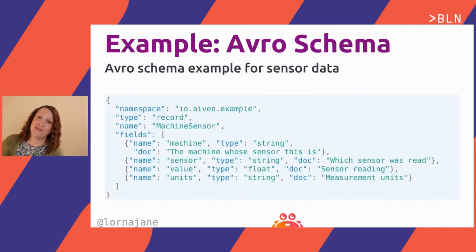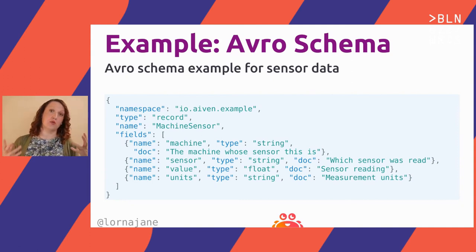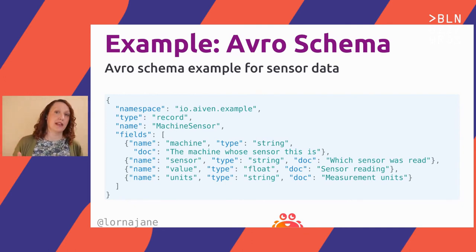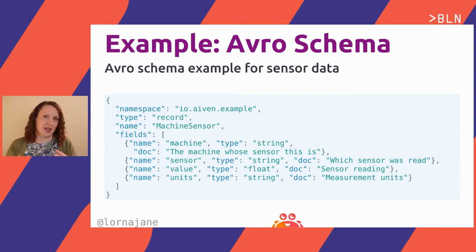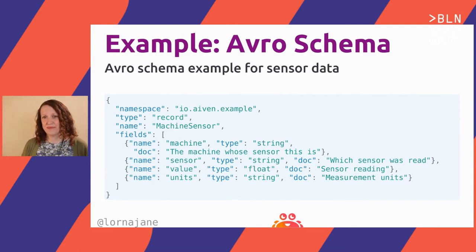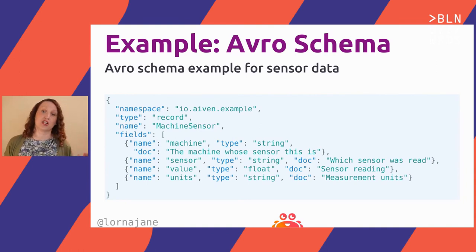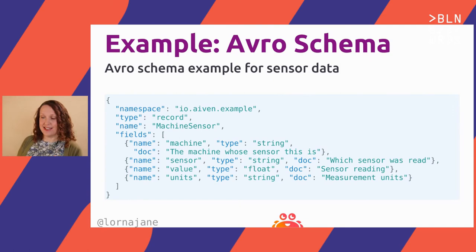So what even is Avro? Here's an example — this is an Avro schema, the data structure you write to describe your data structure. Avro has fields with a name and a type. It also supports a doc string, which you don't see often but is really worth adding — you just don't know when some stranger will need to operate your platform and understand what all those field names are for. And if you've slept since you made it, you're the stranger. In my example I have a machine, a sensor, a value, and the units of that value.